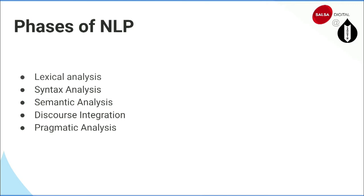Sometimes two phrases in a single context depend on each other. For example, 'this is my mobile, I bought it' — if you say 'I bought it' without context, you can't understand what 'it' refers to. Discourse analysis in NLP provides that context. Also, the word 'book' can mean booking a flight or a reading book — NLP needs to understand those ambiguities.